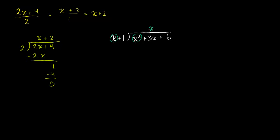x times x plus 1: x times x is x squared, x times 1 is x, so it's x squared plus x. Just like before, we now subtract. x squared plus 3x plus 6 minus x squared plus x — make sure that negative sign applies to the whole thing, so this is minus x squared minus x. x squared minus x squared cancels out. 3x minus x is 2x. Then bring down the 6. So we have 2x plus 6.